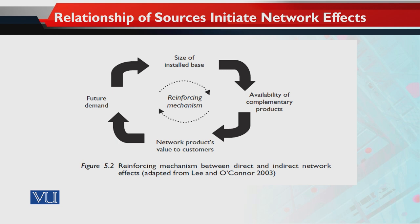This reinforcing mechanism tells us to look at the size of the installed base — that is, the number of customers and firms that have adopted the network product. As this number grows, it will impact the availability of complementary products. When the number is large, complementary products should be available nearby at low prices. Then, when the installed base is reasonable and complementary products are available at low cost, the perceived value of the network product in customers' eyes increases.